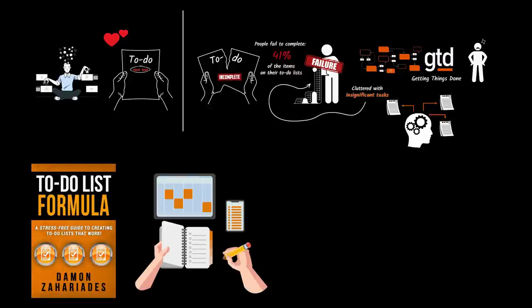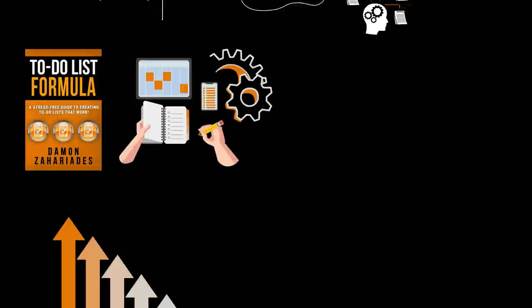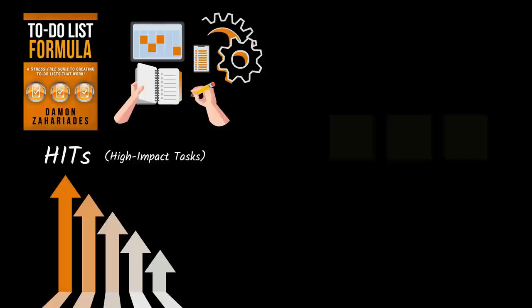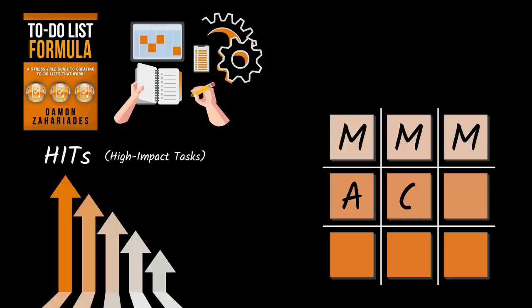In the book To-Do List Formula, Damon Zaharias presents a method to help us get stuff out of our heads and into a well-organized master to-do list system where we can quickly identify our HITs — high-impact tasks. I've condensed Zaharias' master to-do list system into three acronyms which fit inside a three-by-three master to-do list system matrix: MMM, ACE, and LLL.